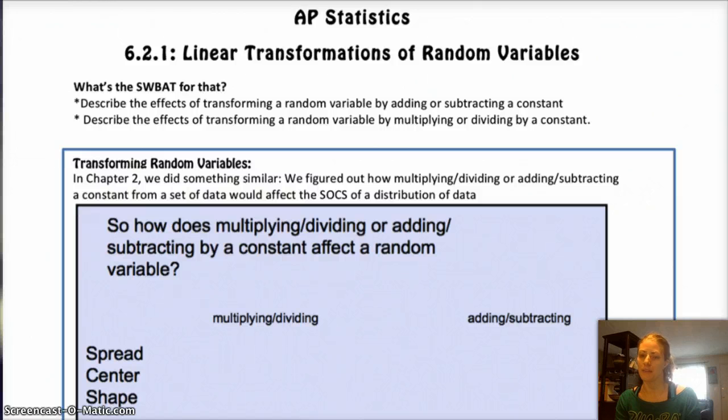So, remember that we did something similar to this in Chapter 2, when we're talking about distributions of variables. And when we multiply or divide by a constant, the mean was also multiplied or divided by that constant, and so was the standard deviation by the absolute value, because standard deviation can only be positive.